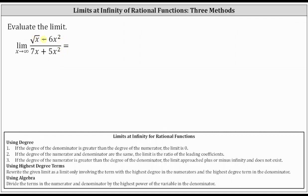Remember, the square root of x is equal to x to the power of 1/2. Let's rewrite the limit in that form. We have the limit of the quantity x to the power of 1/2 minus 6x squared, divided by the quantity 7x plus 5x squared, as x approaches infinity.